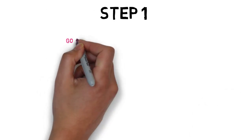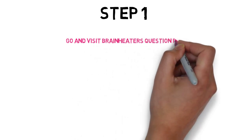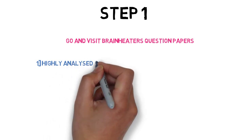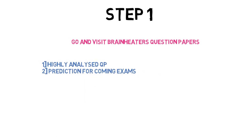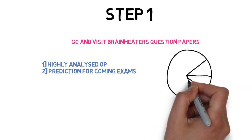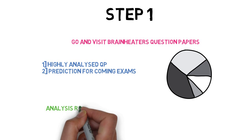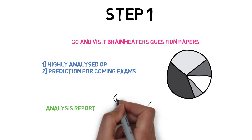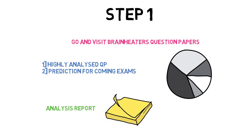The first step is to go and visit the previous question papers. We have a question paper in PDF and we analyze which chapter and which module has come from. You will get an idea of which module is important. In the analysis report, you will know all the predictions about coming exams and get a basic idea of which chapter is important. Please check out the link in the description.